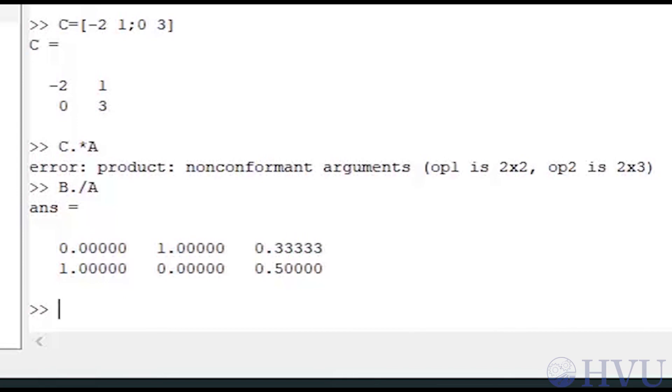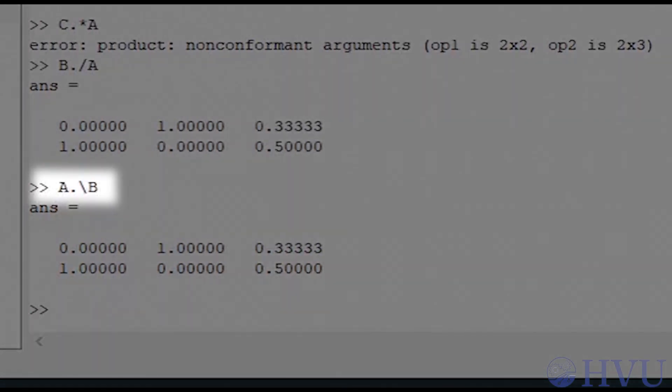Notice that the numerator is on what I like to think of as the uphill side of the slash. Now let's use dot backslash to divide B by A. The syntax is now A dot backslash B. B is still the numerator, and it's still on the uphill side of the slash, so we get the same result.